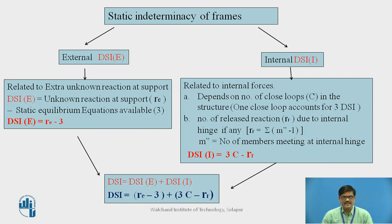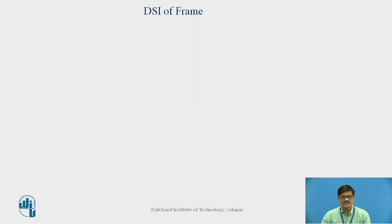You have to take a summation of both external and internal indeterminacy, which gives the total degree of static indeterminacy. That is given by the formula: DSI = (RE minus 3) + (3C minus RR). Now let us look at this with the help of certain examples.